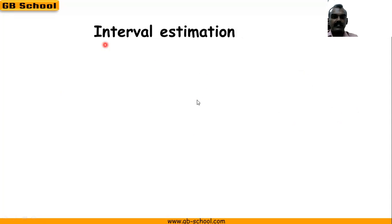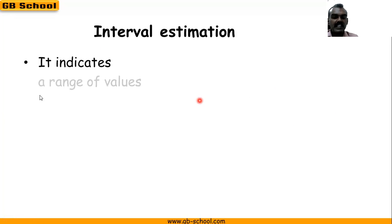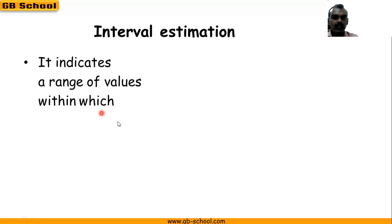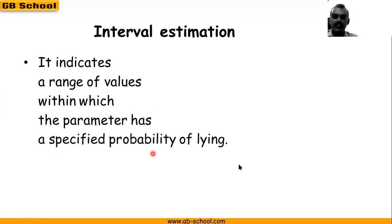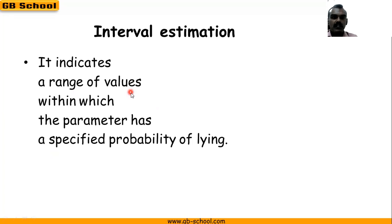Next: interval estimation. What is interval estimation? It indicates a range of values within which the parameter has a specified probability of lying. In point estimation, we estimate one point to another point, but here we are going to give a range of values within which the parameter is going to fall. That process is called interval estimation.